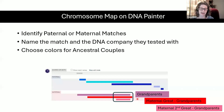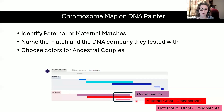If I got another person who was a mystery match and they matched us here, I could look at how much DNA we shared, look at their trees, and determine where they fall along this line — or maybe they would even be a further generation back.